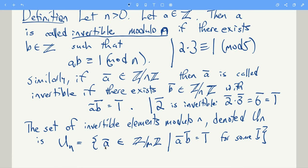So Un is the set of all congruence classes a bar, such that a bar times b bar equals 1 bar for some b bar.